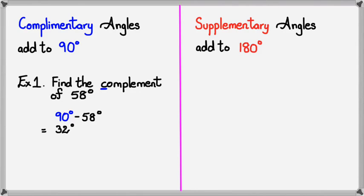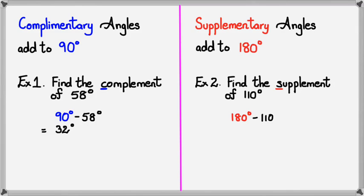With supplementary angles, here's an example. Let's say we want to find the supplement of 110 degrees. We know that supplementary angles add up to 180, so basically we have 180 take away 110 degrees